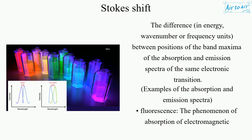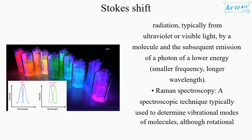Examples of the absorption and emission spectra. Fluorescence: the phenomenon of absorption of electromagnetic radiation, typically from ultraviolet or visible light, by a molecule and the subsequent emission of a photon of lower energy, smaller frequency, and longer wavelength.